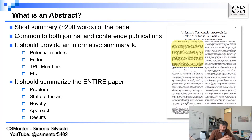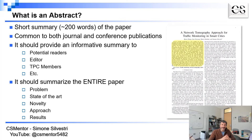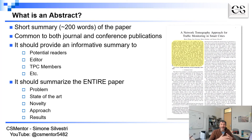Many other actors may look at the abstract to understand what the paper is about, so it's very important that it is written to be very informative. An abstract, even if very short, needs to summarize several different components: what is the problem, what is the state of the art, what is the novelty of the paper, what is the approach, and what are the results.